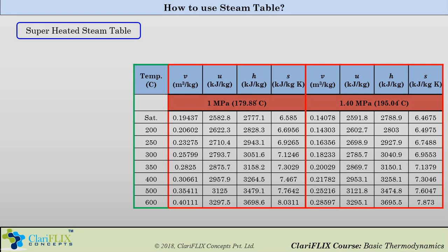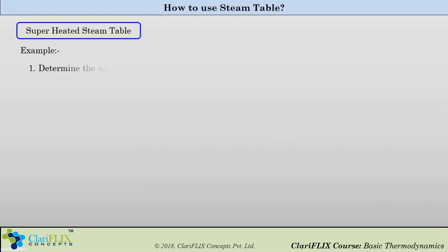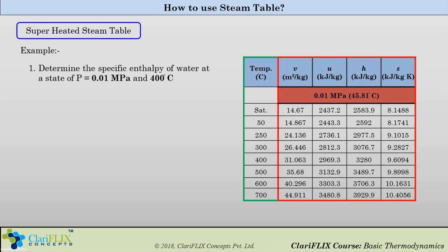Let us use the superheated steam table with an example: determine the specific enthalpy of water at 0.01 MPa and 400°C. Pick the table for 0.01 MPa, find the row where temperature is 400°C, and look at the enthalpy column. The answer is 3280 kJ/kg.